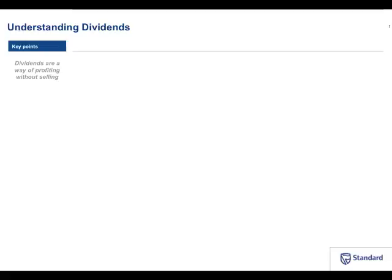Simon Brown here, doing a video on understanding dividends for Standard Online Share Trading. Dividends are your share of a company's profit. Assuming a company makes a profit, they'll use some of it to pay off debt, some to expand operations — perhaps upgrade plant and equipment or buy out competitors. If they're a mature company, they'll take some of that profit and give it back to shareholders in the form of a dividend. Growth companies and smaller companies might retain all of their profit to grow the business, but more mature companies will typically be paying out a dividend.